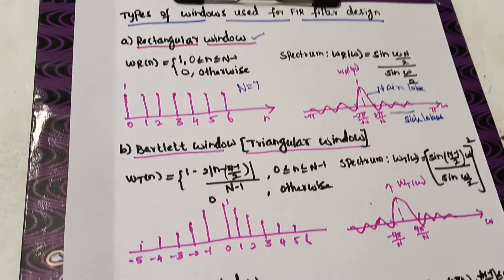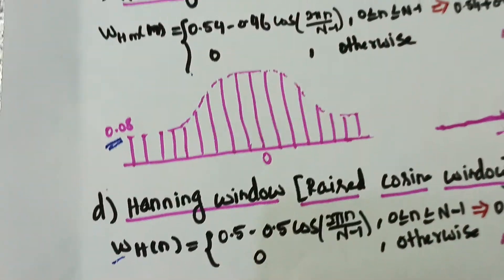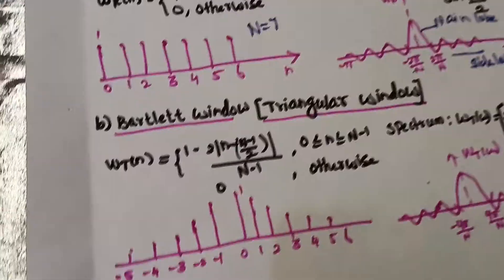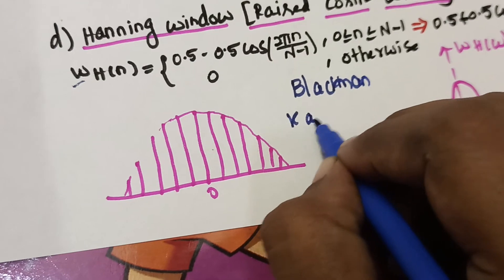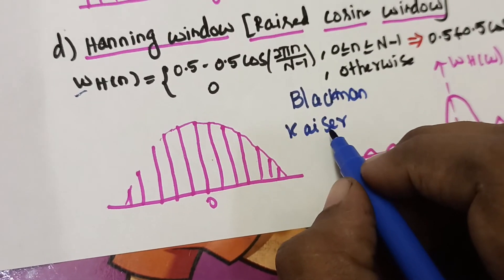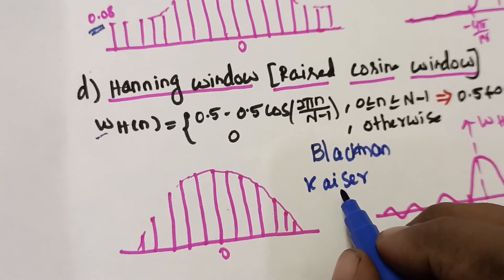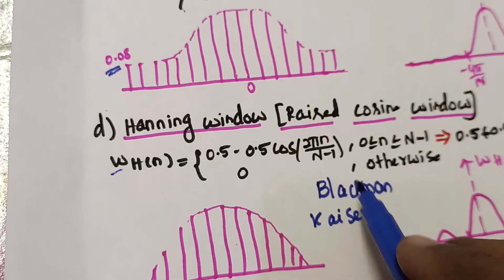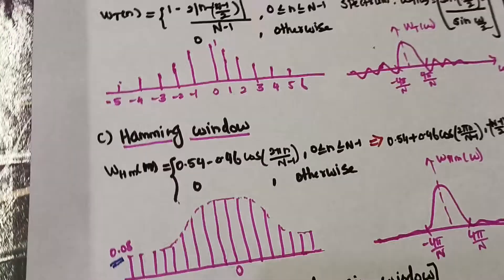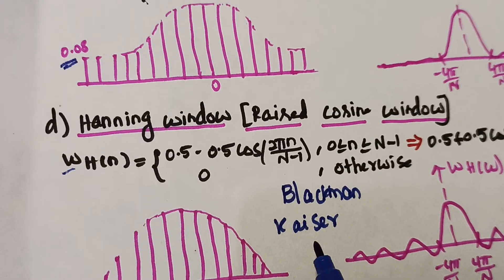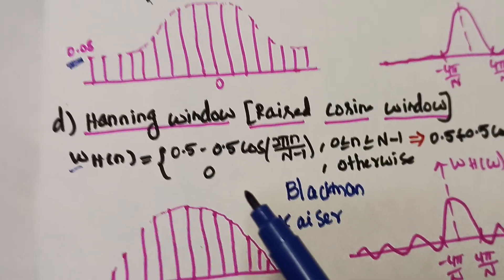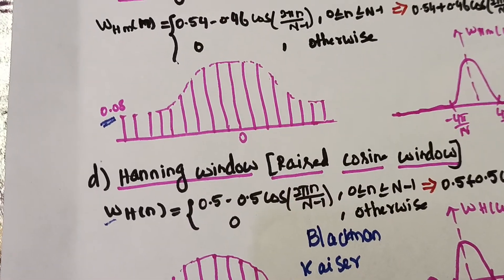Apart from these four windows — rectangular, Bartlett, Hamming, and Hanning — there are two other windows: the Blackman window and the Kaiser window. Most problems will require only the four main windows, with rectangular, Hamming, and Hanning being the most commonly used. Triangular, Blackman, and Kaiser windows are used rarely. I hope you have understood the different window functions used to design FIR filters. Thank you.